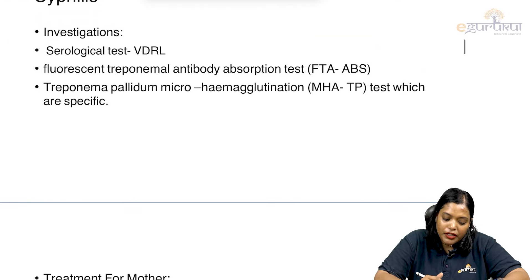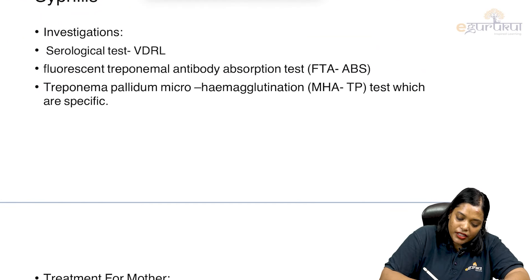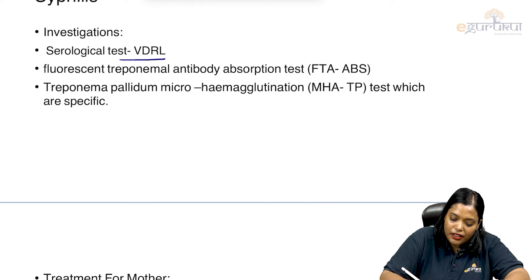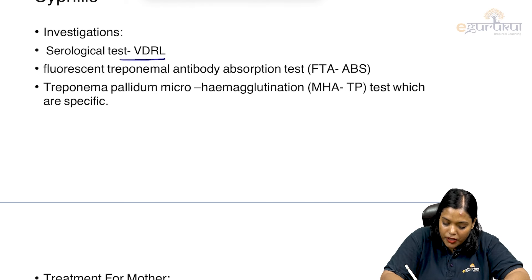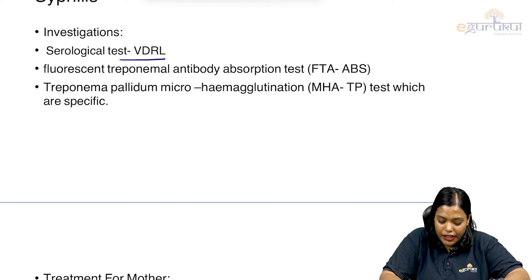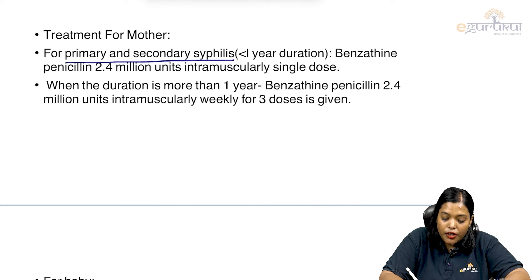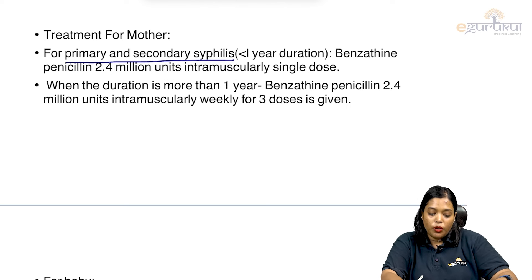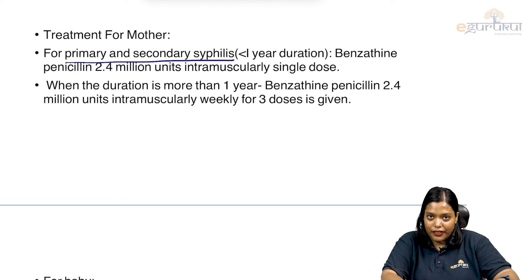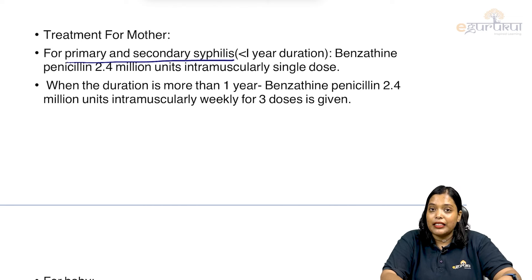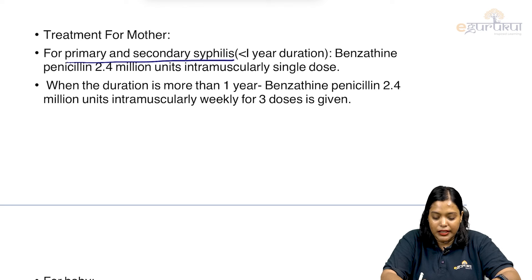Coming to syphilis — it is screened with a serological test. We mainly do VDRL. We can also do fluorescent treponemal antibody absorption test or Treponema pallidum microhemagglutination test, which are more specific. If the mother has primary or secondary syphilis of less than one year duration, give benzathine penicillin 2.4 million units intramuscularly as a single dose.